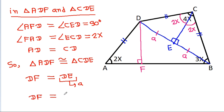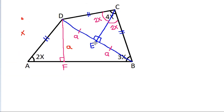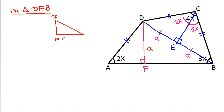So DF will be equal to A. Now, in triangle DFB, angle DFB is 90 degrees. Suppose this angle is theta, and we have DF is A. And DB is A plus A, that will be 2A.